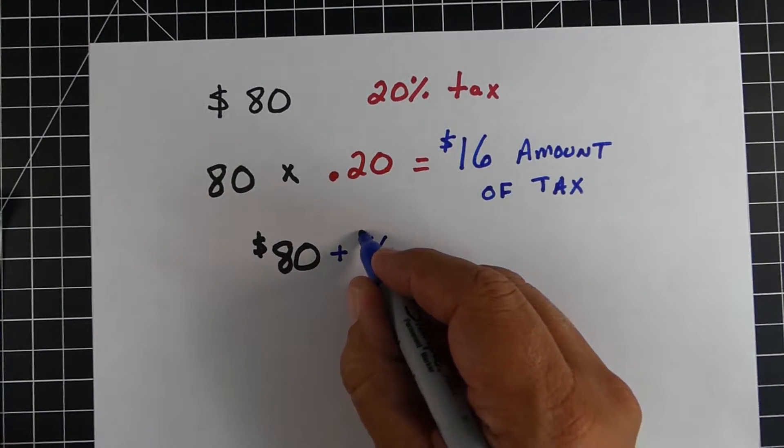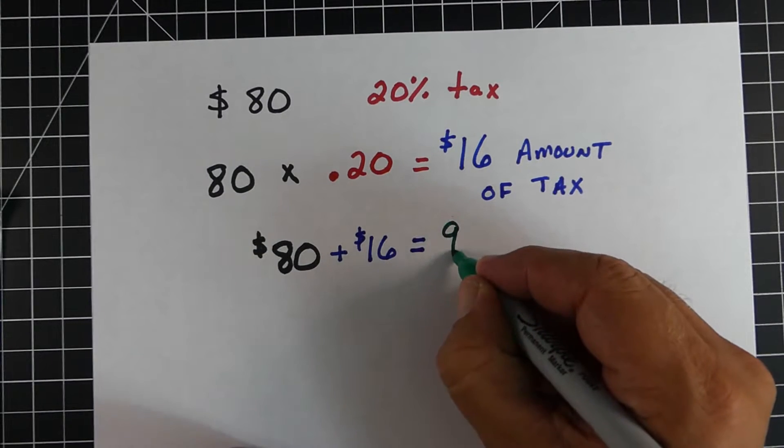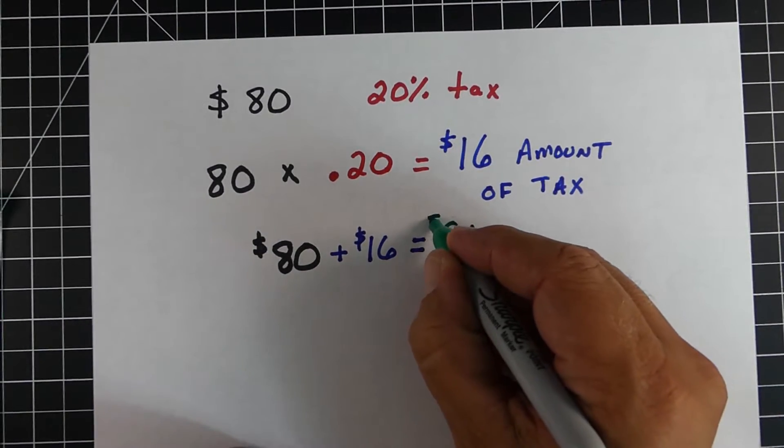We then take the $80, which is the total amount, plus the amount of tax, which is $16, and that gives us our total cost of $96 with tax.